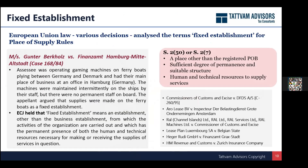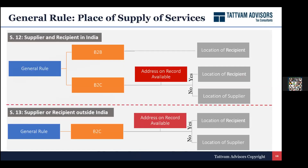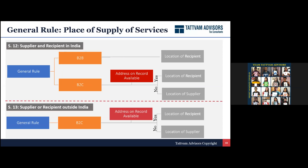Having discussed fixed establishment and location of supplier, let us now move to place of supply of services. Section 12 and Section 13 are the relevant sections. Section 12 applies where both supplier and receiver are in India. Section 13 applies when either the supplier or receiver is outside India. Section 12 is further divided into specific rules for certain kinds of services and a general rule — if not covered under any specific rule, the general rule applies.